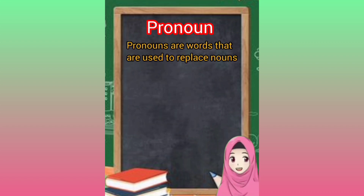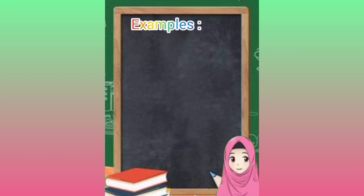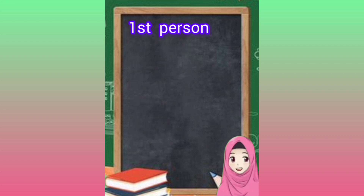Pronouns are words used to replace nouns. Types: personal, possessive, reflexive, demonstrative, and interrogative/relative. Examples — personal: I, he, she, they; possessive: my, his, her; reflexive: myself, yourself; demonstrative: this, that; interrogative: who, what; relative: whom, whose.